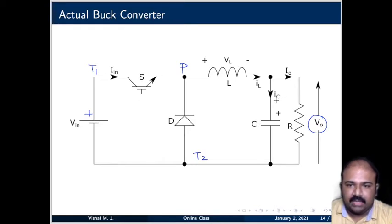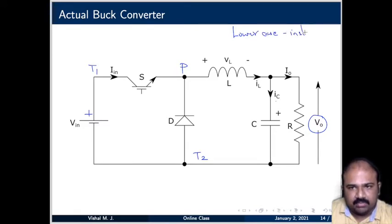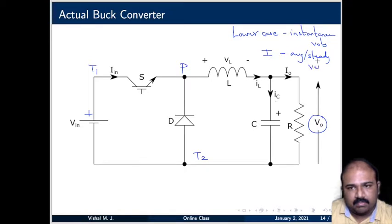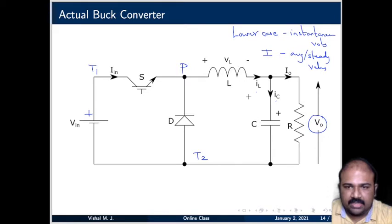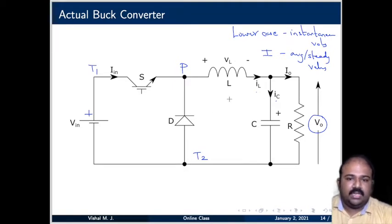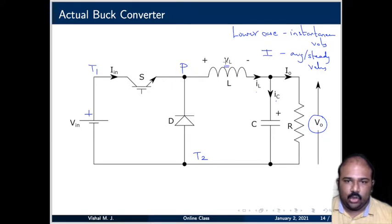Lowercase letter i and uppercase letter I are used for marking current — this is not random. Lowercase is used for instantaneous values and uppercase is used for average or steady values. Uppercase V0 is the steady output voltage, uppercase I0 is the steady output current. Lowercase iC and lowercase iL are instantaneous currents. Lowercase vL is the instantaneous voltage drop across the inductor, which changes with respect to time.